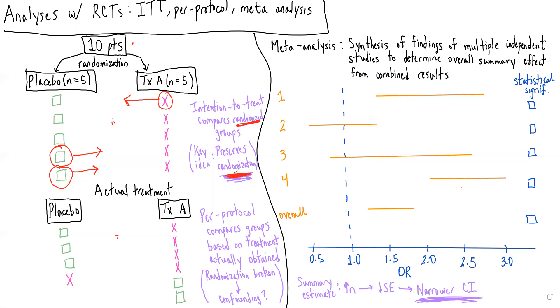So intention-to-treat analyses are typically favored. However, we can also do a per-protocol analysis, which is where we compare the different treatment groups based on what they actually received. So it would be these four individuals with the placebo and these six individuals who got treatment X or treatment A.